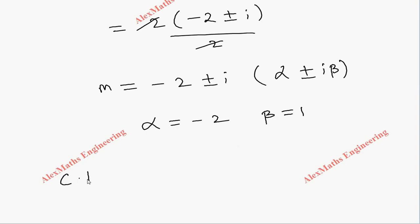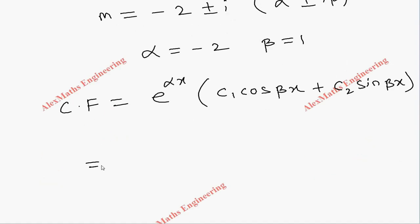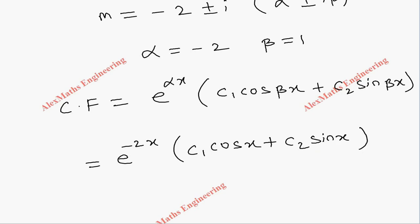The complementary function is e^(αx) · (c₁·cos(βx) + c₂·sin(βx)). Substituting α = -2 and β = 1, the complementary function becomes e^(-2x) · (c₁·cos(x) + c₂·sin(x)).